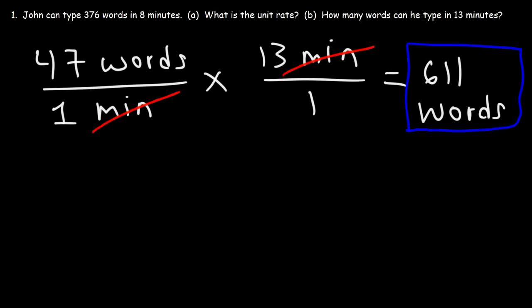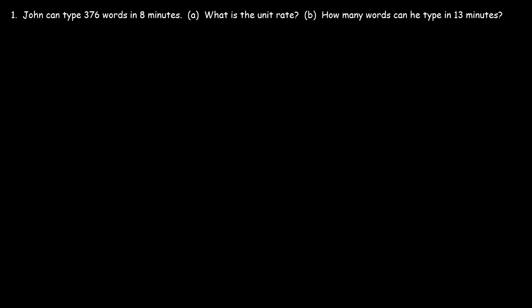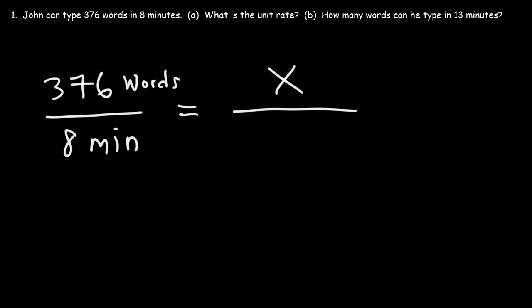Now the second method to get the same answer involves using proportions. Most of you might be more familiar with that technique. We're going to write two fractions separated by an equal sign. We know he can type 376 words in 8 minutes. And we want to find out how many words, or x, can he type in 13 minutes. So basically we need to solve for x. If we have two fractions separated by an equal sign, what can we do to solve for the missing variable?